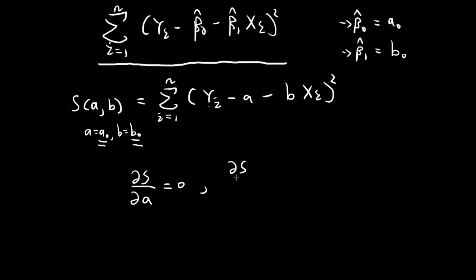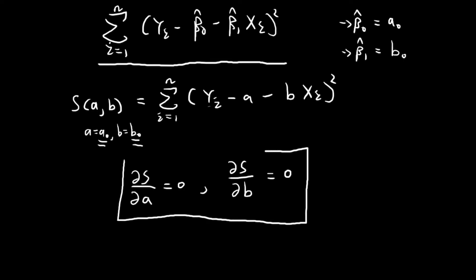And then we need to find the partial derivative of S with respect to B, and set this equal to 0 as well. So A0 and B0 will be two numbers such that both of these conditions are satisfied. From these two conditions, we derive the values of A0 and B0, which are the values that cause both conditions to be satisfied.